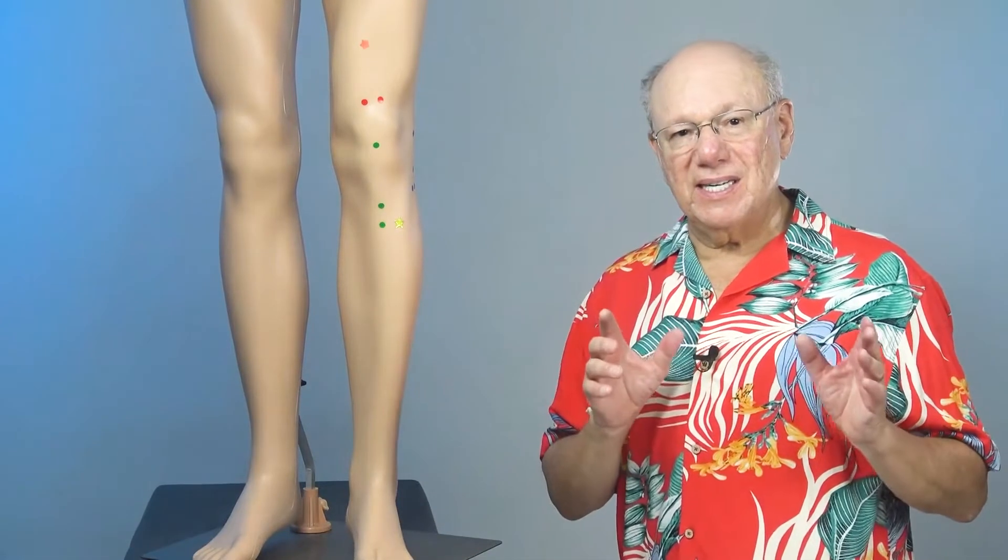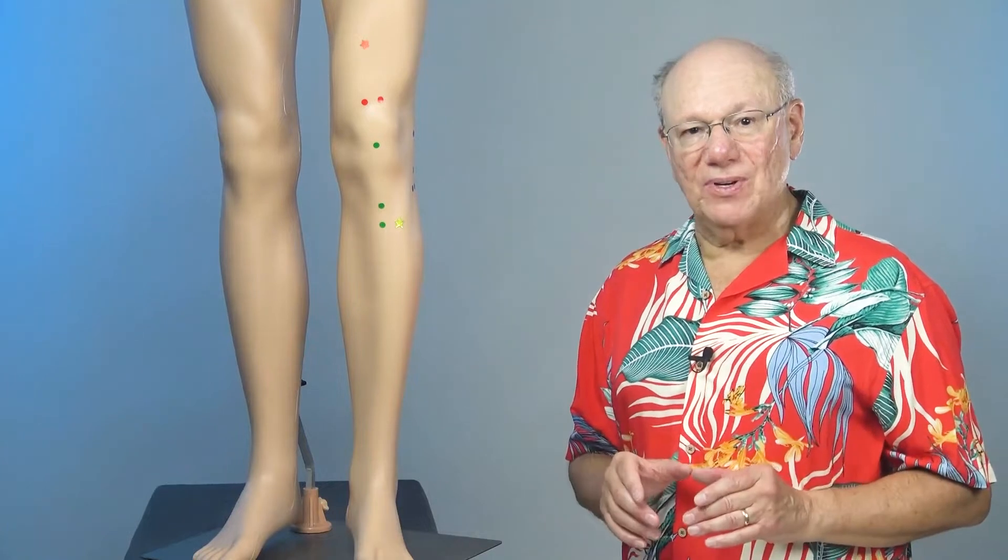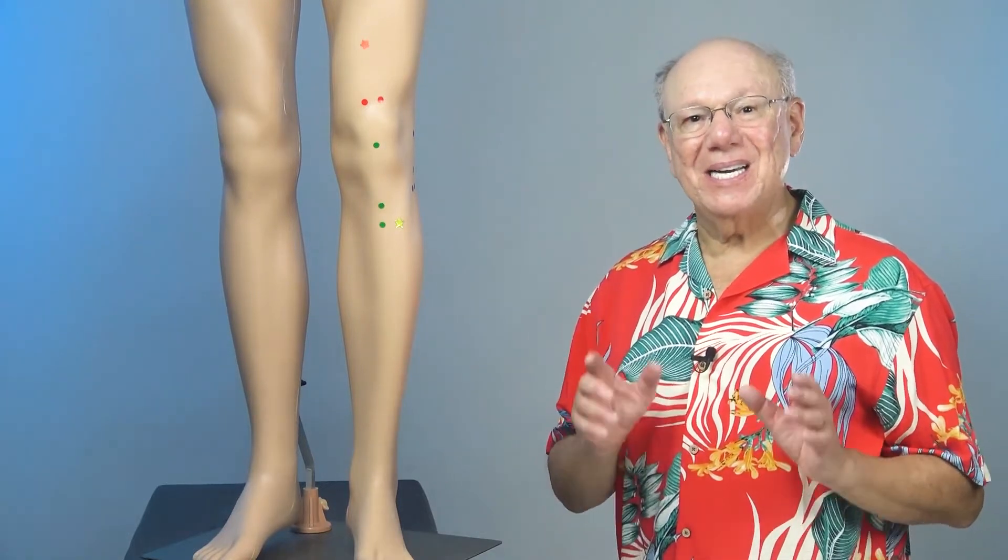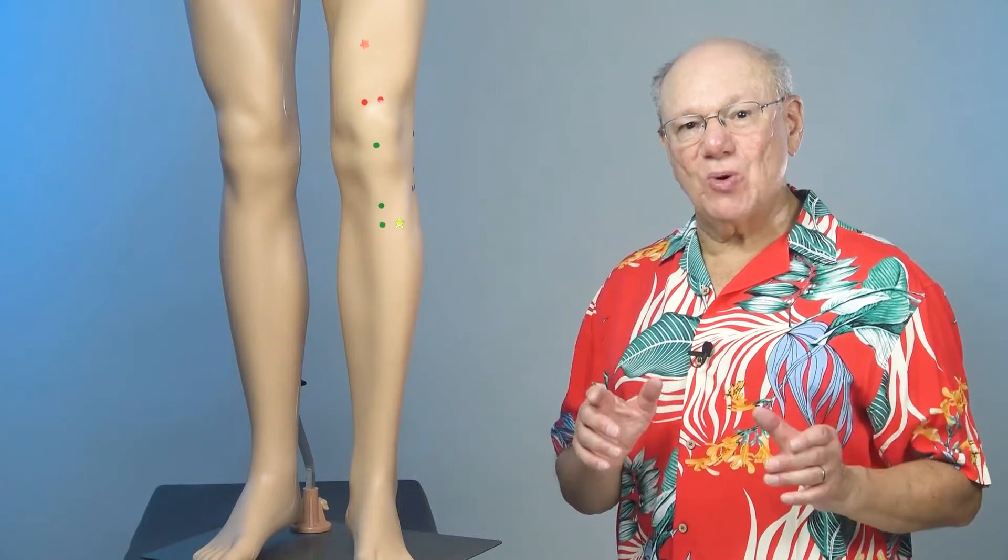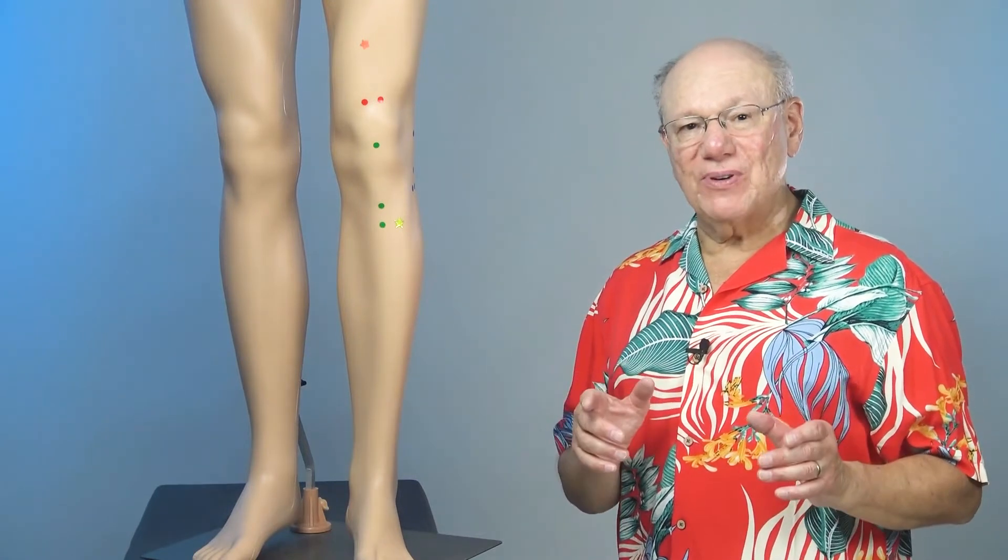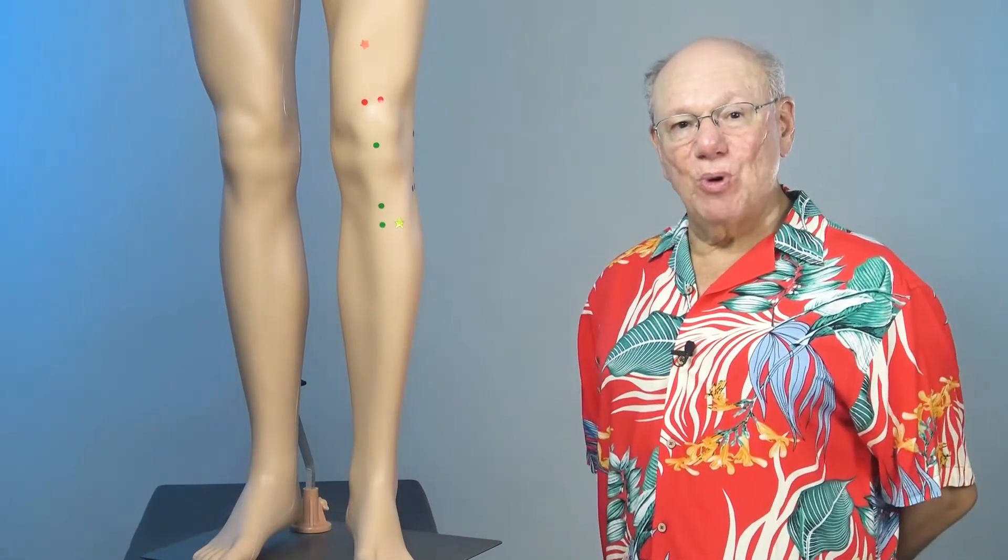Push in to find a point that is sensitive, sore, tender, or painful. That is the appendicitis miracle point. Activate this point by rubbing it quickly five times, take a break for a count of five, and repeat four more times.